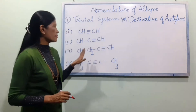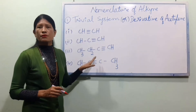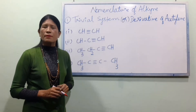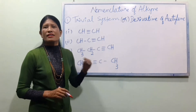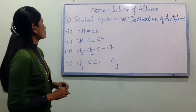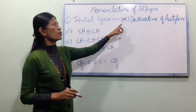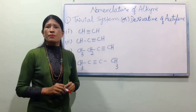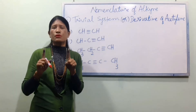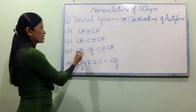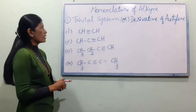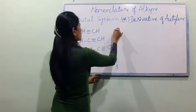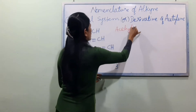In the case of the trivial system — also called the derivative system — we have to use the trivial system. The derivative system has to be used too. It is called the Trivial System or derivative of acetylene. When the chain is short, we bring in acetylene. Acetylene is acetylene — C2H2 — written as A-C-E-T-Y-L-E-N-E.